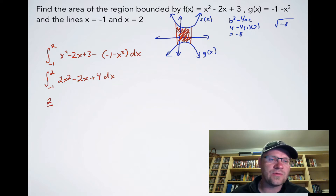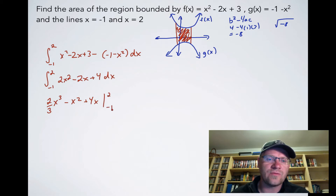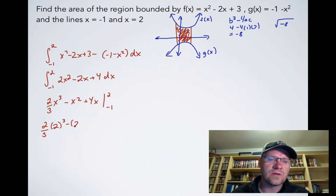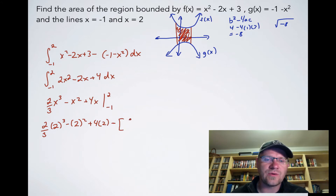Taking the integral gives two-thirds x cubed minus x squared plus 4x, evaluated from negative one to two. Substituting x equals 2: two-thirds times 8 minus 4 plus 8. Then subtracting the result for x equals negative one: two-thirds times negative one cubed minus negative one squared plus 4 times negative one.